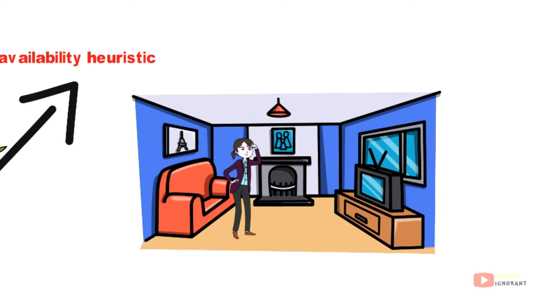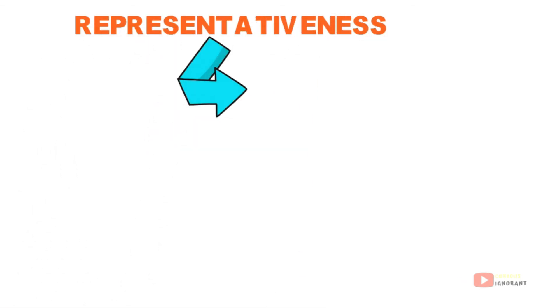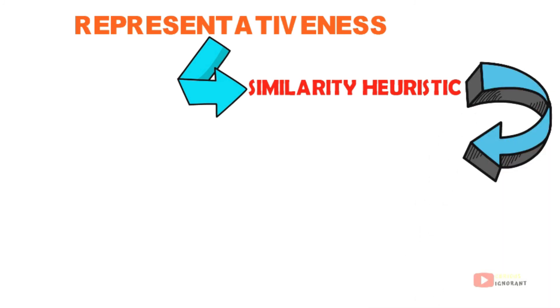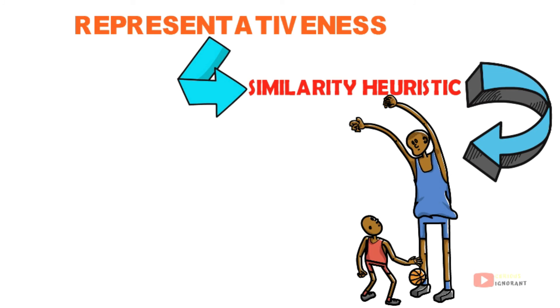Representativeness, in other words, similarity heuristic. We think a 2-meter African-American man is more likely to be a professional basketball player than a 1-meter-67-centimeter Jewish guy because there are lots of tall basketball players and not many short Jewish ones.